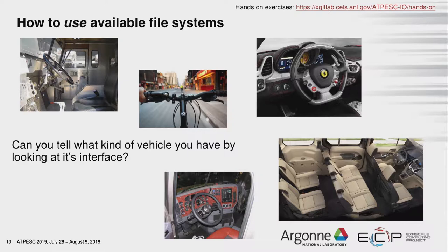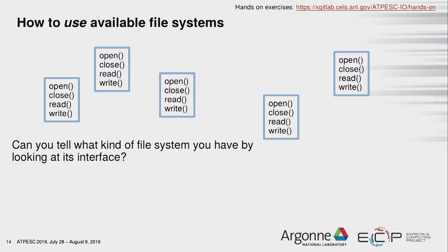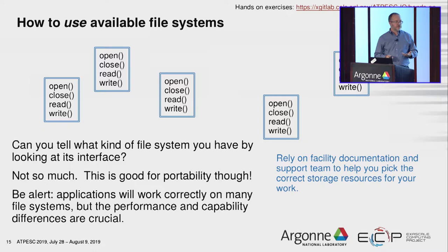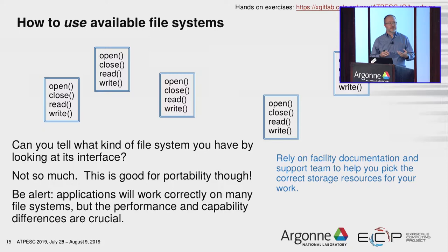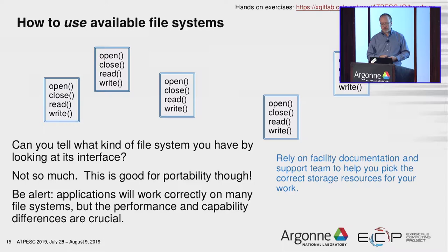As a cautionary tale: file systems all have the same interface — open, close, read, and write. This is good because an application written for one file system will still work elsewhere. But it can be deceptive because you can get away with running things on the wrong kind of storage system and it will work — you just might not make good use of your time. Keep an eye on your facility documentation and make sure you're using the right tool for the job, even though several may technically work.